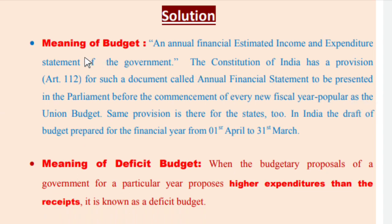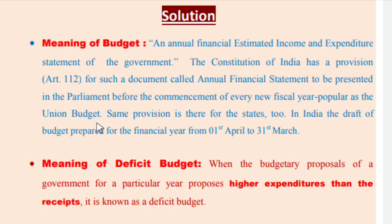Before going to the main concept, first of all let us clarify what is a budget. As you know, a budget is an annual financial estimated income and expenditure statement of the government. The Constitution of India has a provision, Article 112, for such a document called Annual Financial Statement to be presented in the Parliament before the commencement of every new fiscal year, popularly known as the Union Budget. In India, the budget is prepared for the financial year from 1st April to 31st March.